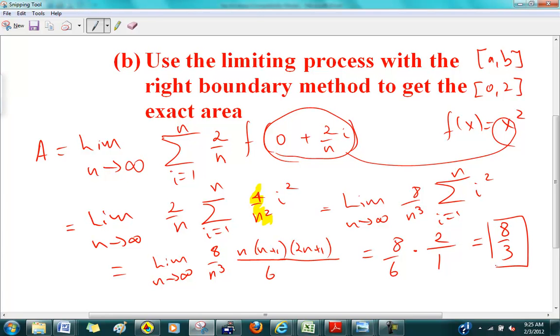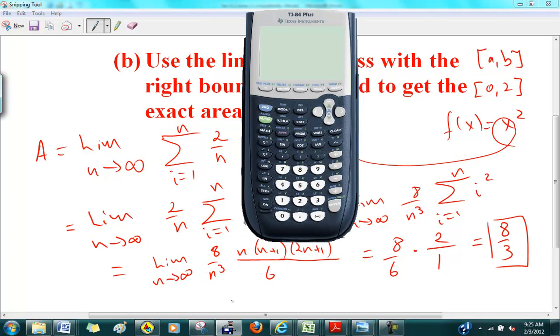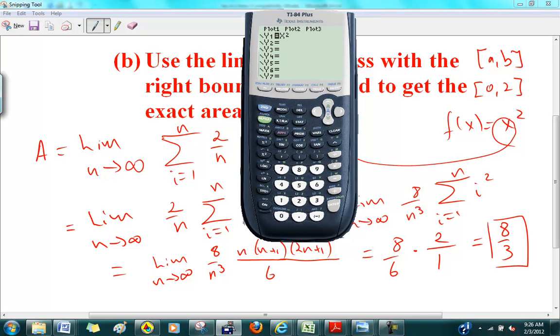How do I check this? You're going to check this using our calculator. I've taught you this before. You want to put in the equation x squared in there, go graph that. And then what you're going to do? Second calc, number seven. Lower limit? Zero. Upper limit? Two. Boom, your answer: 8 over 3, 2.66667. 8 over 3.